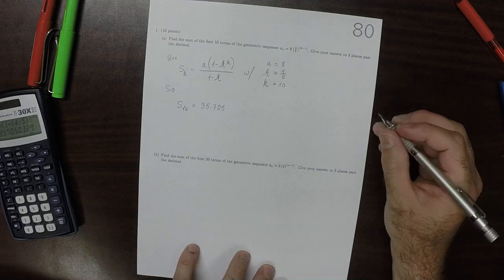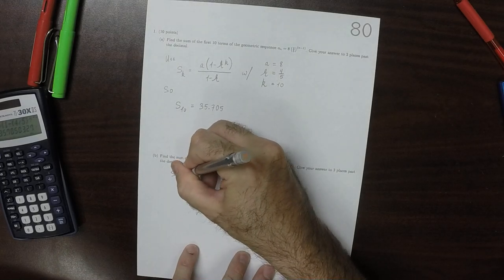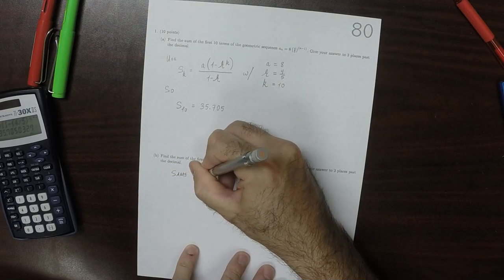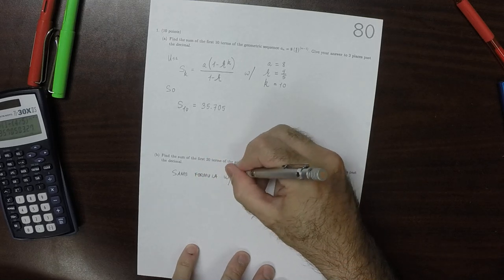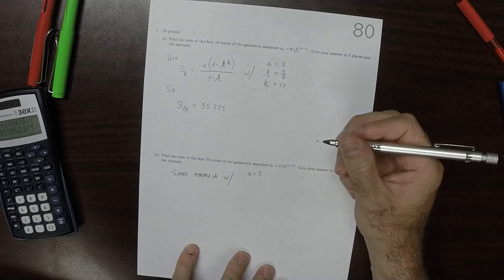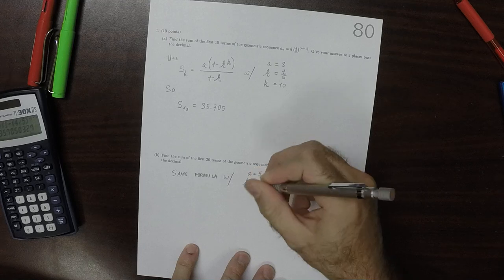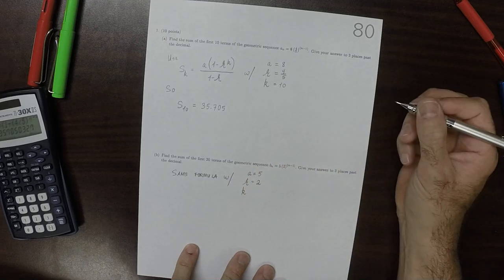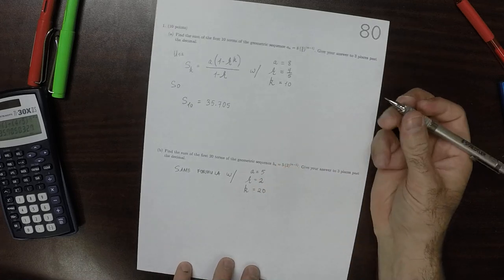Again, this is the same formula as above, and now we're going to do it with A is 5, R is 2, and K is 20. So in this case.